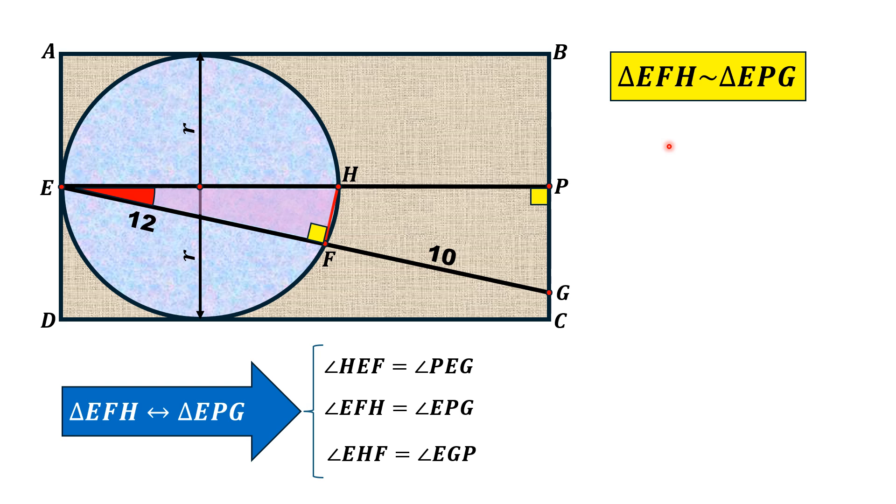If two triangles are similar, then the ratio of their sides is always equal. From here we have EF over EH equals EP over EG. And substituting the values of these,